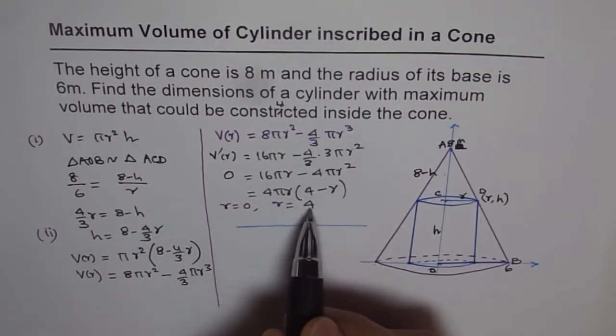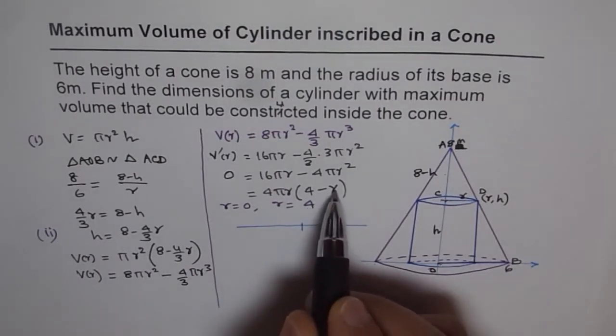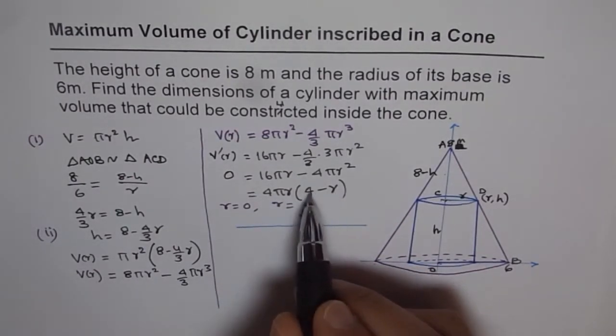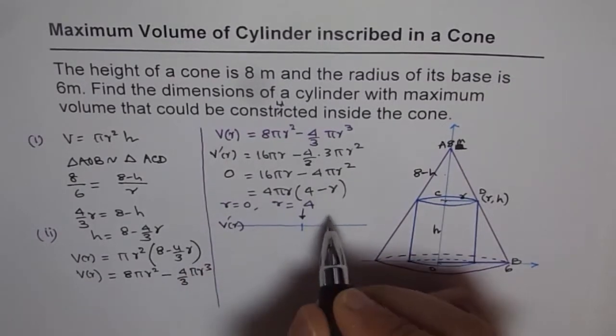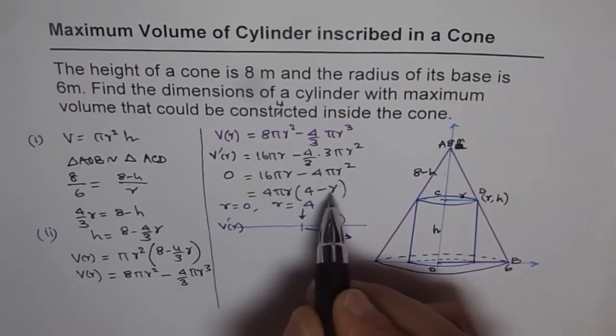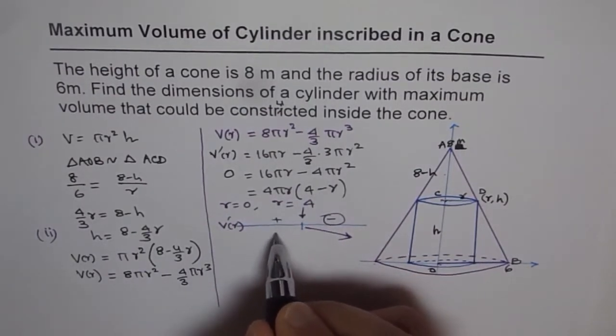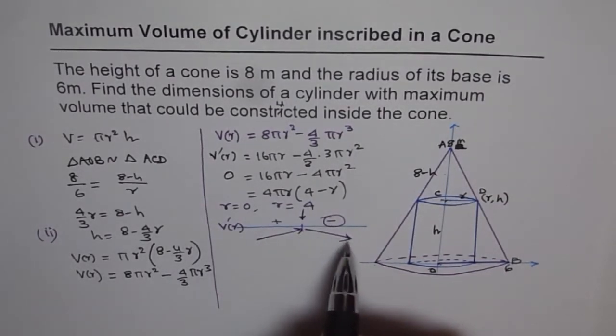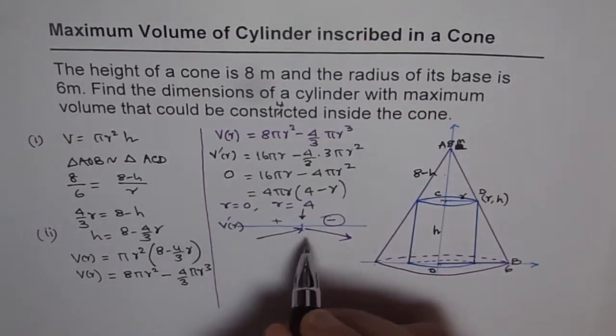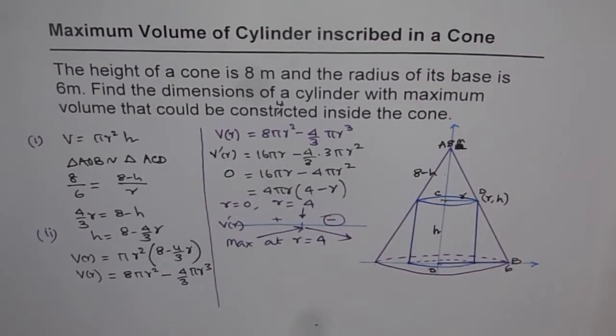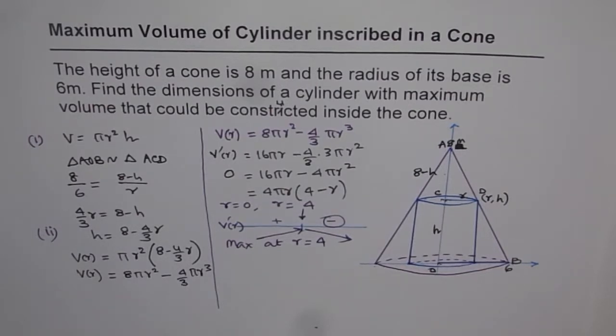Now, if r is more than 4, then this quantity will be negative. So this is a point where r is 4. If I have r more than 4, then v dash r is going to be negative. That means it will be negative in this region. But if r is less than 4, in that case, this quantity will be positive. And v dash r will thereby be positive. So v dash r is increasing when r is less than 4 and decreasing thereafter. And we know at r equals to 4, it is 0. Therefore, we have a maximum at r equals to 4.